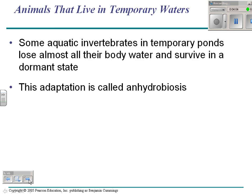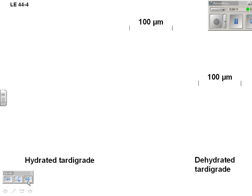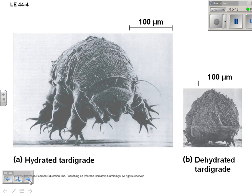There's a pretty cool thing called anhydrobiosis, where some invertebrates live in temporary ponds. They can completely dehydrate, and then when water shows up again, they rehydrate and are just fine. The organism is called a tardigrade — pretty cool concept.